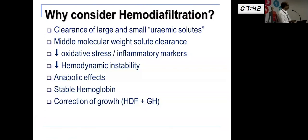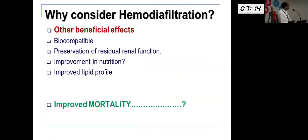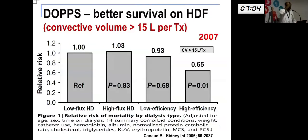Clearance of large uremic solutes, middle molecules, and decrease in oxidative stress have all been shown in small experiments. Regression of LVH has also been shown with hemodiafiltration — and similarly with nocturnal home hemodialysis. Other benefits include biocompatibility, preservation of residual function, nutrition, and lipid profiles. But is there a mortality benefit? Observational data from Dr. Bernard Canaud in 2007 (the DOPS data) seemed to show that if you use convective volumes more than 15 liters in and 15 liters out, there may be some mortality benefit. This led to three trials.